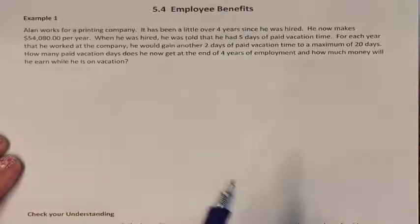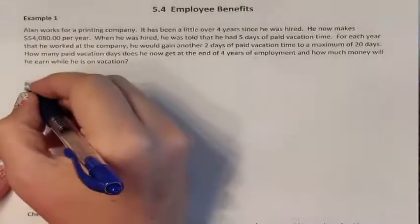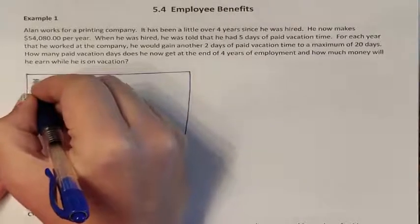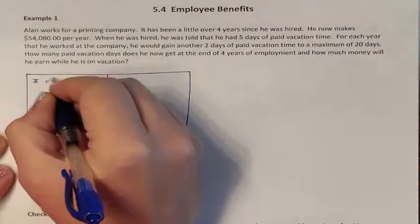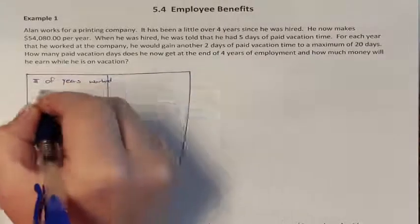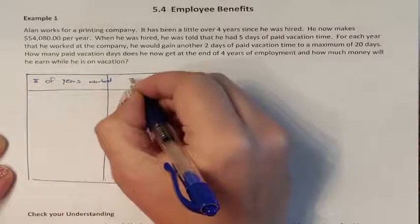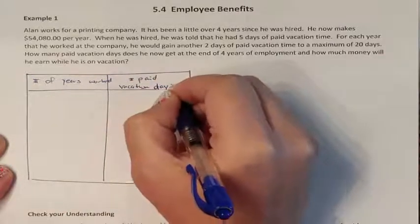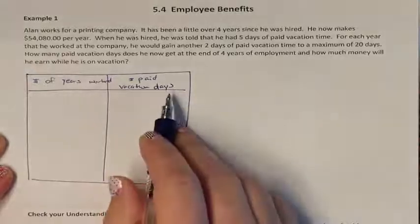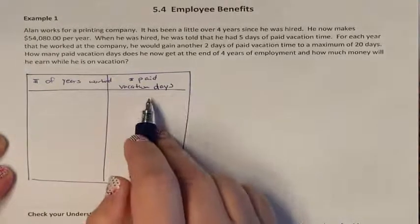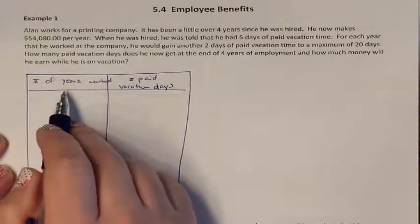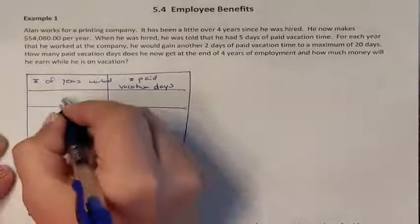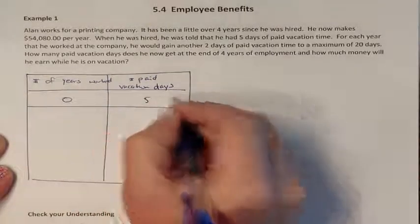The easiest way to see this is with a table. The table will show the number of years worked and the corresponding number of paid vacation days, since the days available depend on how many years he has worked. On the day he was hired, he had 5 days.